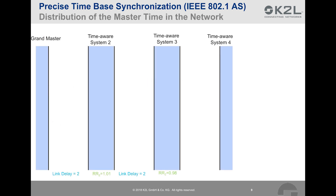In AVB networks, the time-based synchronization information is distributed from the grandmaster to the other devices along a tree that is established in the network. Here in this example, we see four devices along this timing hierarchy. The device with the grandmaster clock is depicted on the left and has a direct connection to the time-aware system 2 device. The process starts with the grandmaster device sending out a sync message at time 20 — in grandmaster time. After the link delay time, the sync message is received by time-aware system 2. The grandmaster then sends a second message called a follow-up message to time-aware system 2.